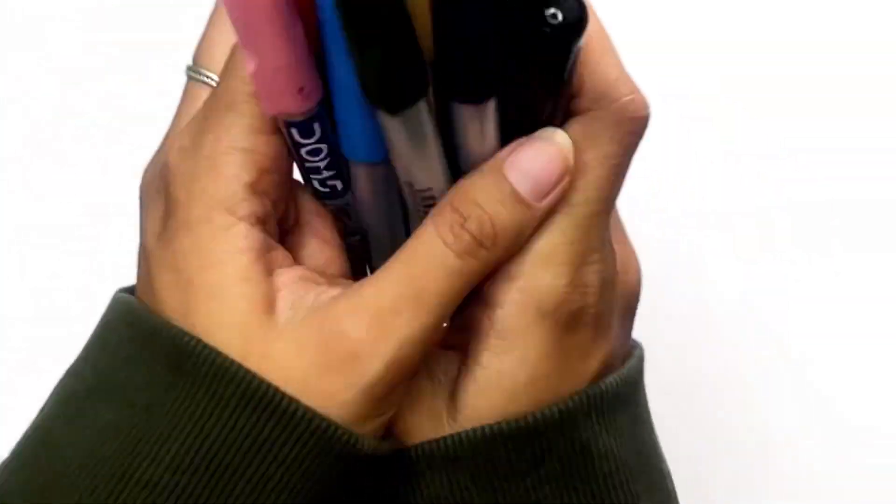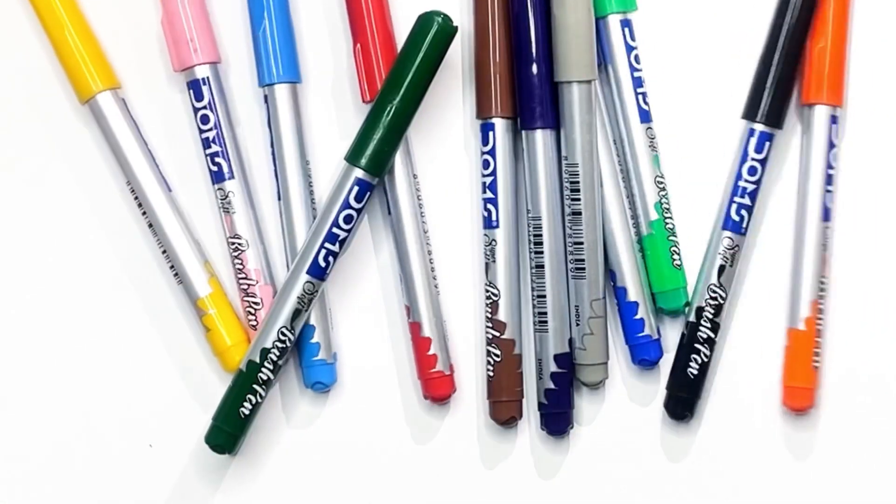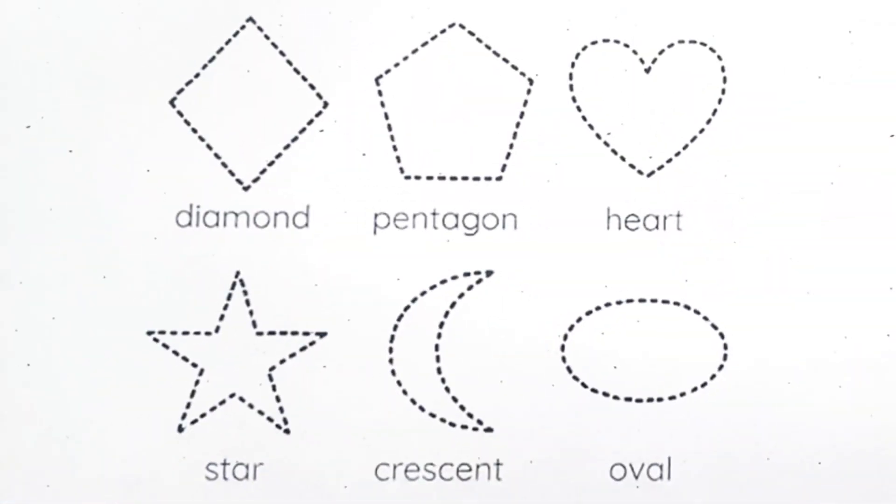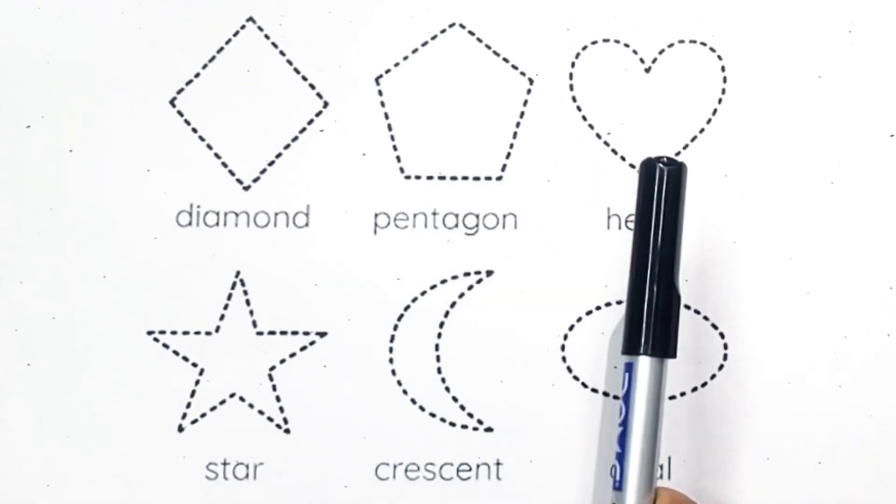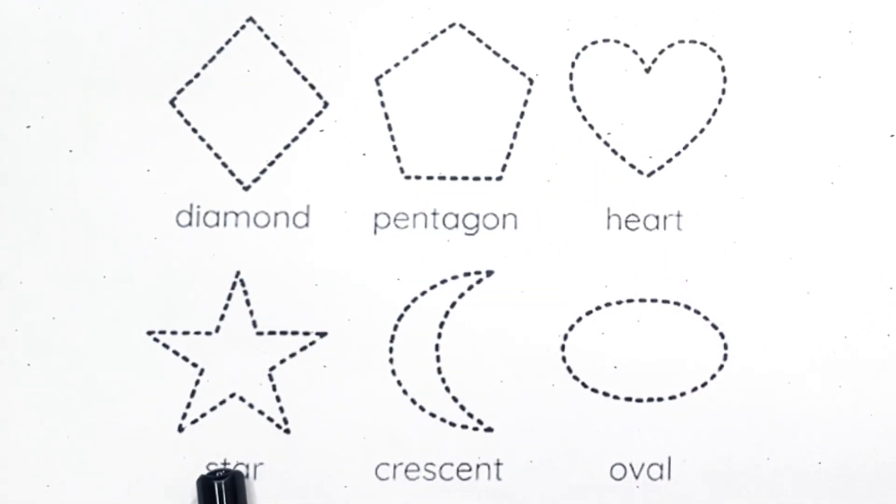Let's learn shapes and colors. Diamond, pentagon, heart, star, crescent, oval.